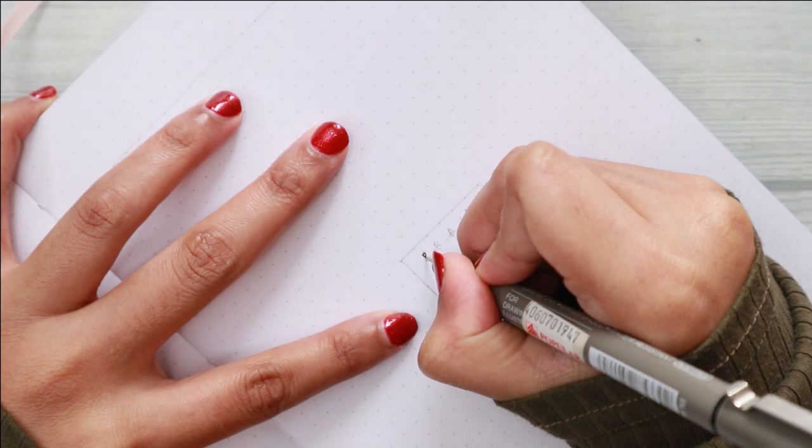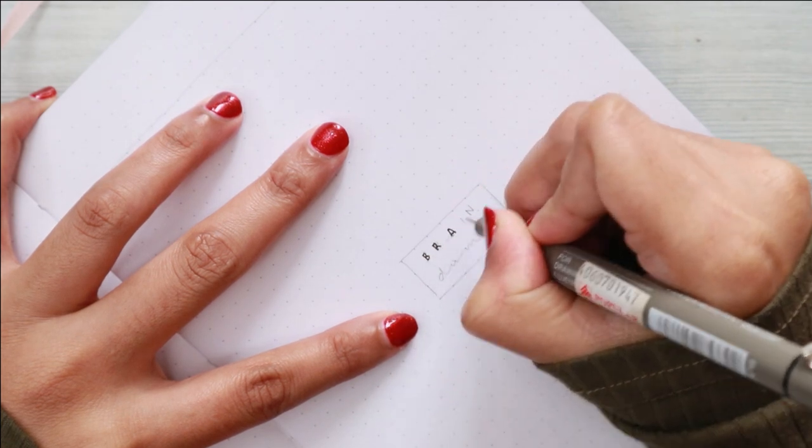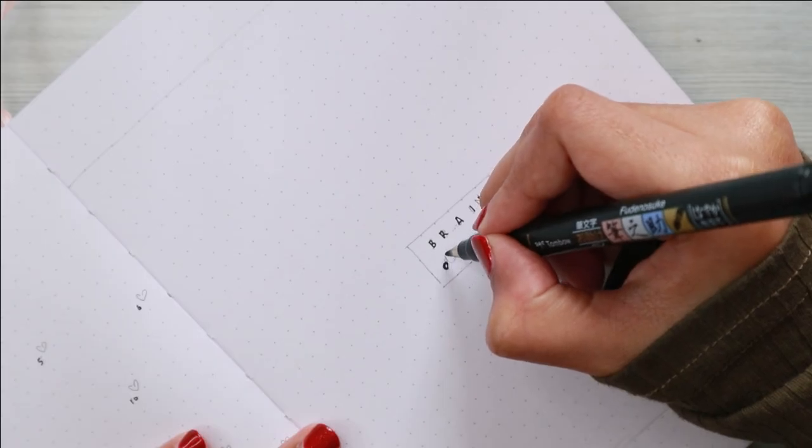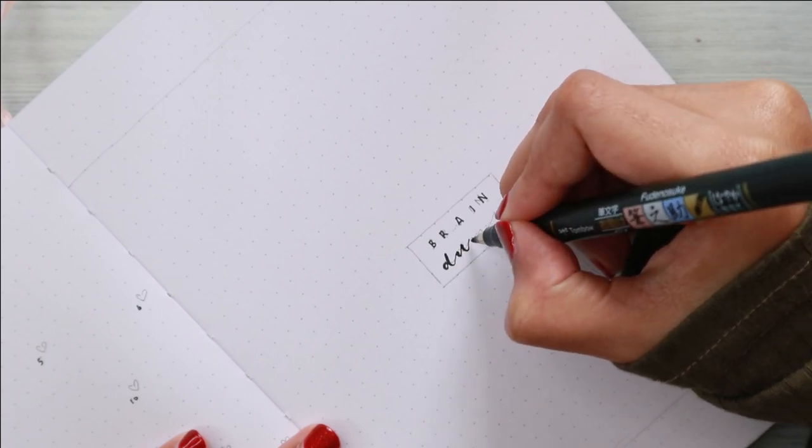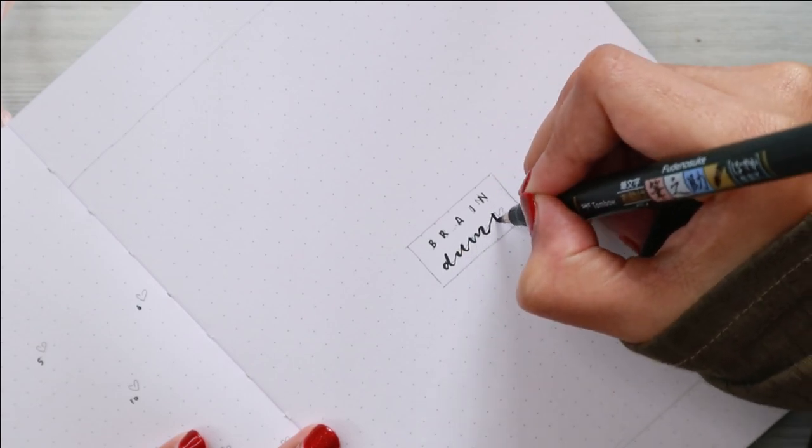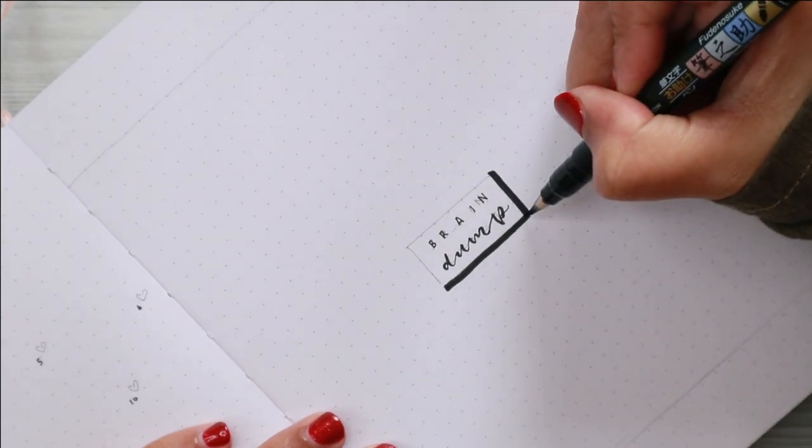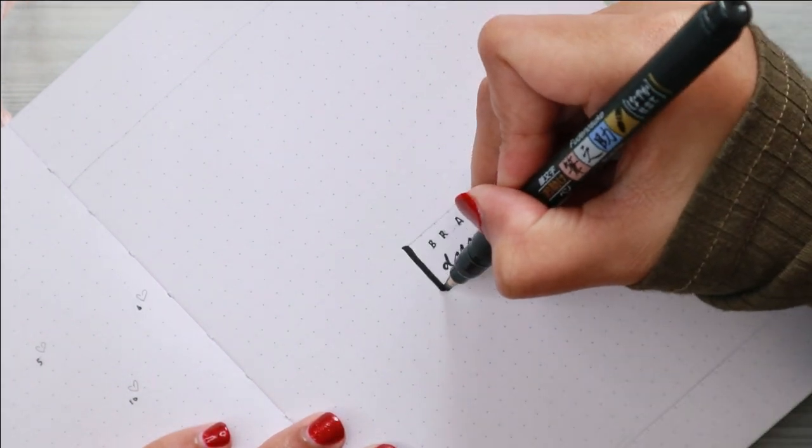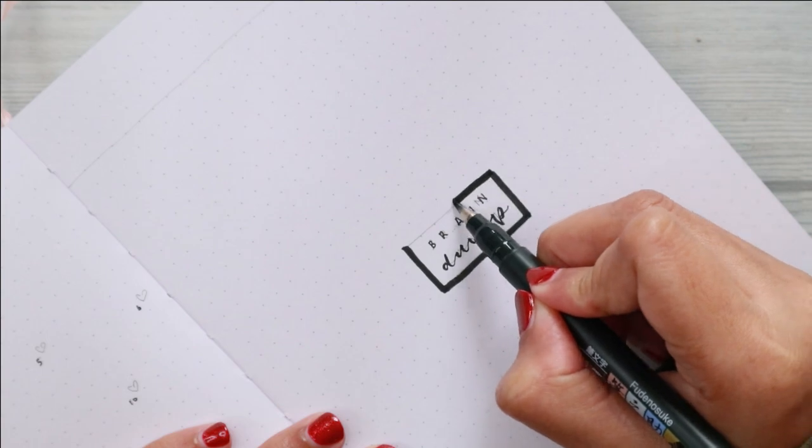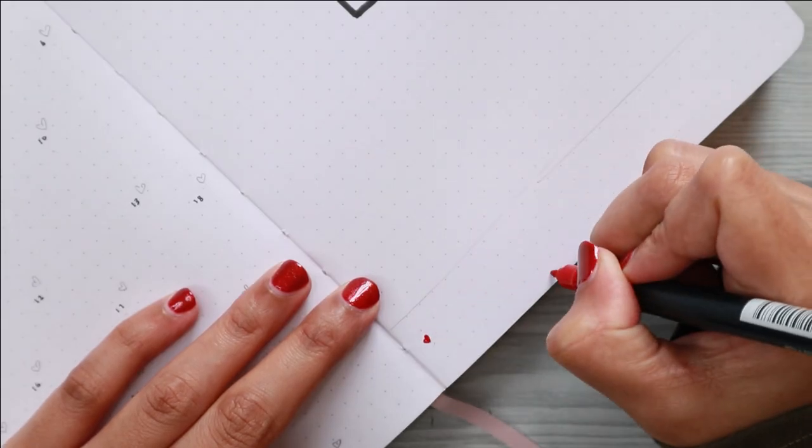The next spread is my brain dump spread. I am not going to go into details about this spread—I think you all know by now what a brain dump is. But to explain this briefly to those of you who are new to bullet journaling: as humans, we always have so many thoughts running through our heads at once that it can seem overwhelming.